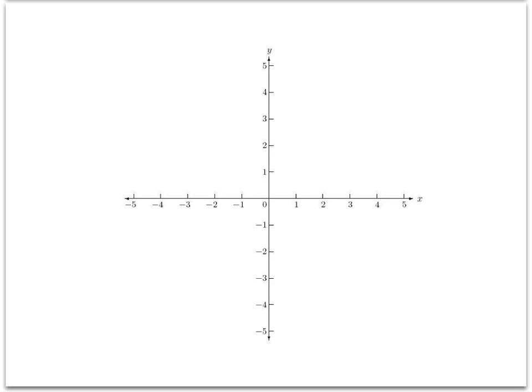When we use the Cartesian coordinate system, we have two number lines. We've got one number line running horizontally, and we call that the x-axis. And then we've got another number line running vertically, and we call that the y-axis.